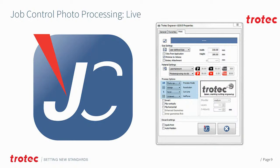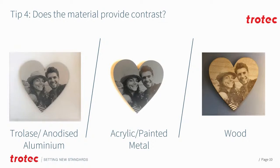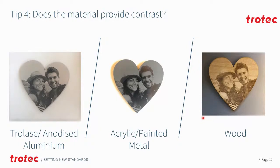Next, let's look at the actual materials. When choosing a material, especially for different sized products, you need to consider whether it provides enough contrast. Materials that provide lots of contrast include Trotec laser material — where engraving through the top layer reveals a contrasting layer underneath — and anodized aluminum, which is another great material. We can also look at acrylics, depending on backing color, painted metal, and then materials like wood, which can be a bit trickier. The same image across different materials can give drastically different results, so it's really worth trying different materials.